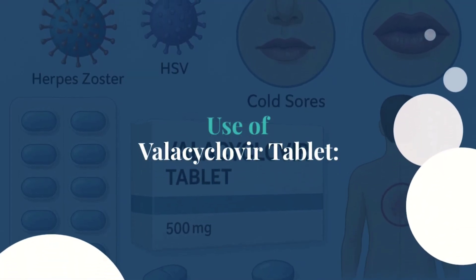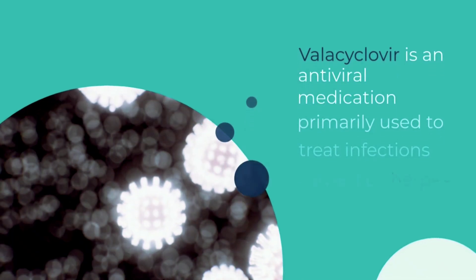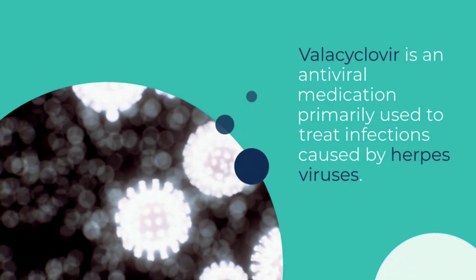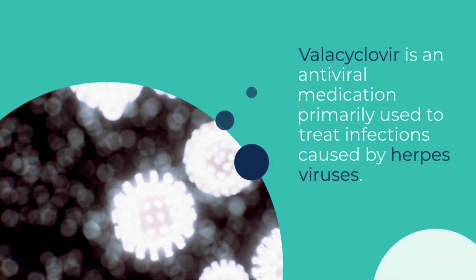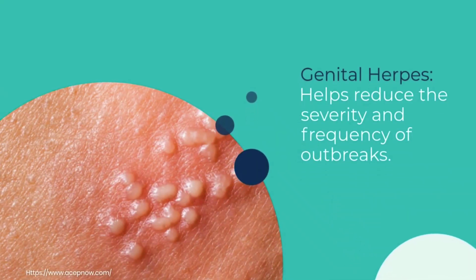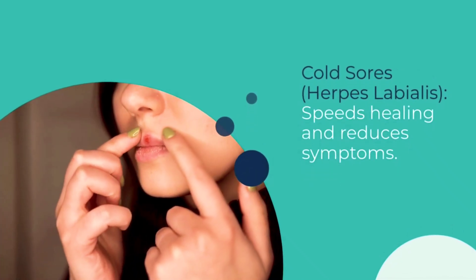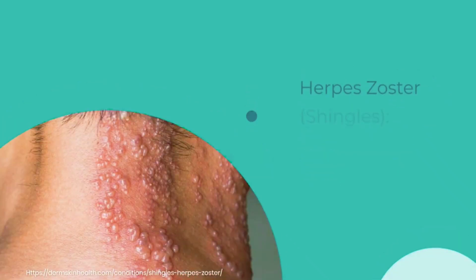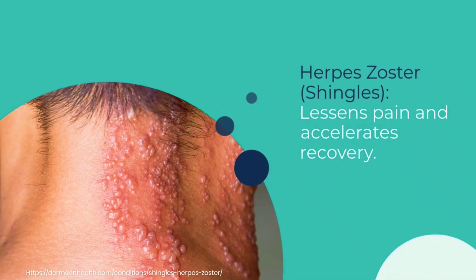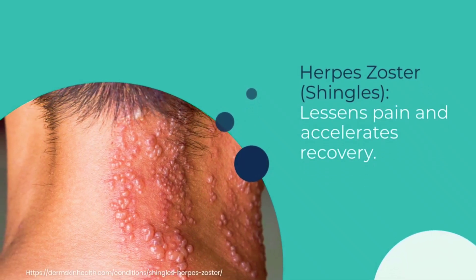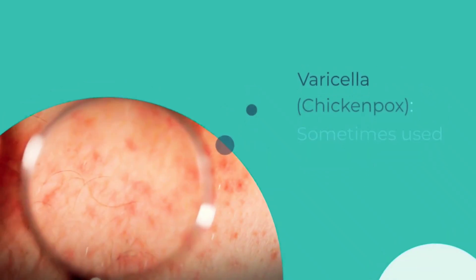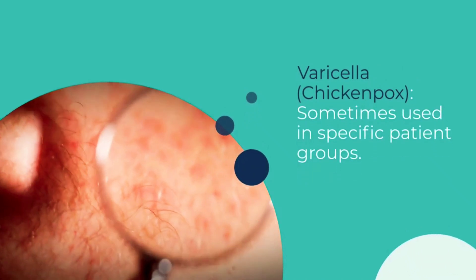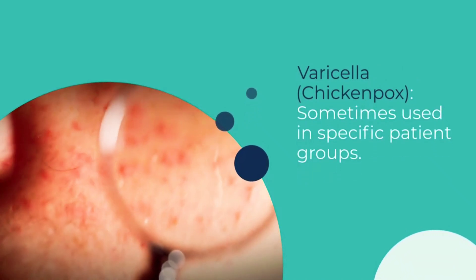Valacyclovir is an antiviral medication primarily used to treat infections caused by herpes viruses. These include genital herpes, where it helps reduce the severity and frequency of outbreaks. It is also used for cold sores or herpes labialis, speeding healing and reducing symptoms. In herpes zoster or shingles, it lessens pain and accelerates recovery. It is sometimes used for varicella or chickenpox in specific patient groups.